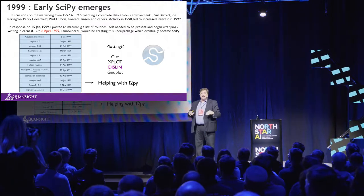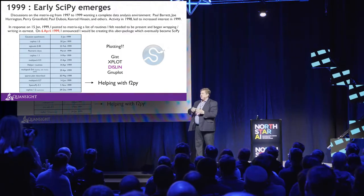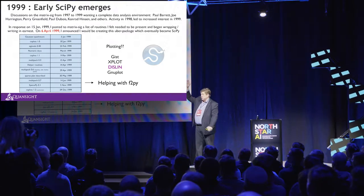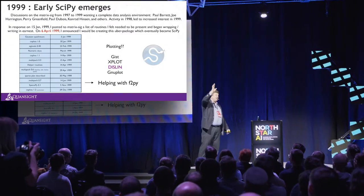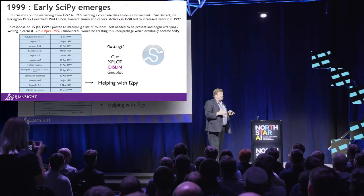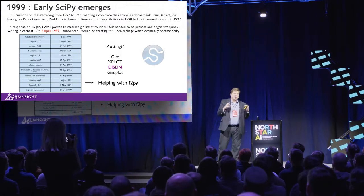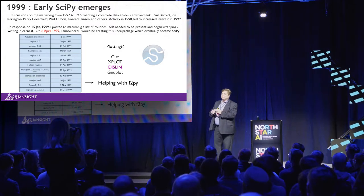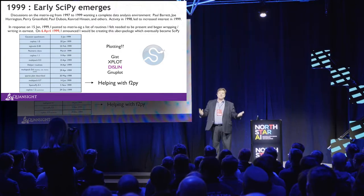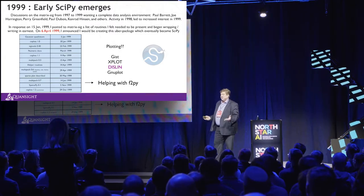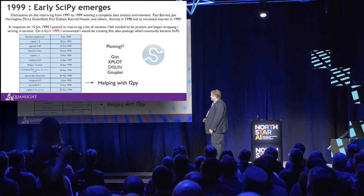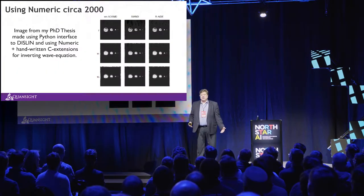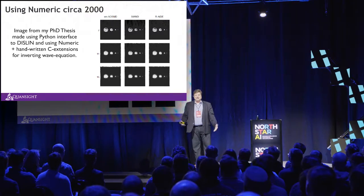So Pearu wrote something called F2Py. It took any Fortran code and automatically created Python extensions and Python bindings to it, automating the process of building SciPy. It's a fascinating tool, and that was in 1999. I ended up using these tools to complete my PhD — I did finish it, eventually, in 2001 — along with a plotting package called Thyslin written by a European, and a lot of C extensions.